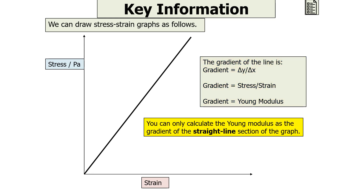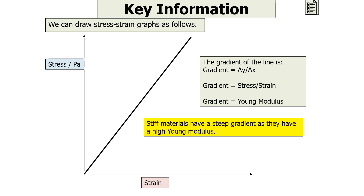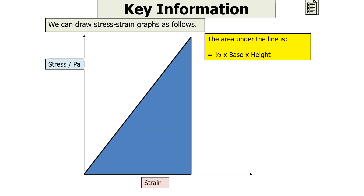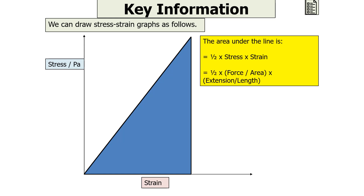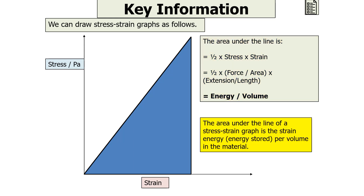Note that you can only calculate the Young Modulus as the gradient of the straight-line section of the graph — that is, only when the material is exhibiting elastic behaviour, below its limit of proportionality, following Hooke's law. Stiff materials will have a steep gradient because they have a high Young Modulus. The area under the line of a stress-strain graph forms a right-angled triangle, giving half stress times strain, which equals energy divided by volume — so the area under the line is the strain energy stored per unit volume in the material.